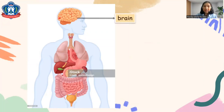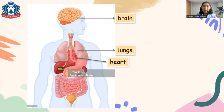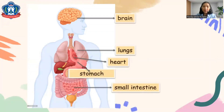Let's start from the top — this is the brain. Next we also have the lungs, and next to the lungs we have the heart. Then here we have the stomach, here we have the small intestine, and the last one here is the large intestine.